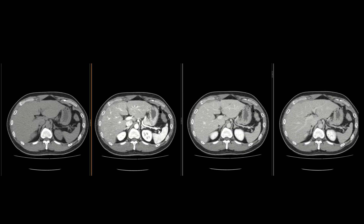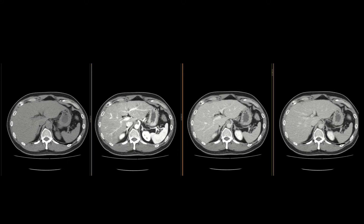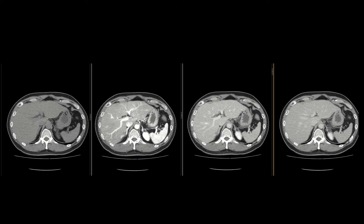In routine imaging of the entire abdomen and pelvis, we most commonly image in portal venous phase, so we most commonly see the liver in portal venous phase. We also not uncommonly image without contrast, so you'll see the liver on non-contrast quite a bit as well. For dedicated liver evaluation — like characterizing liver lesions — we're going to see all of these phases together on the same examination.